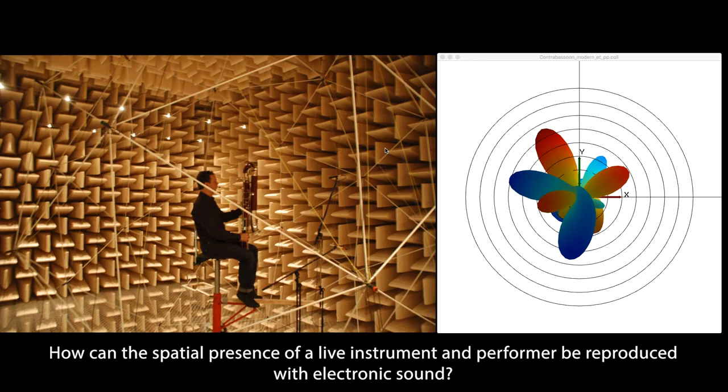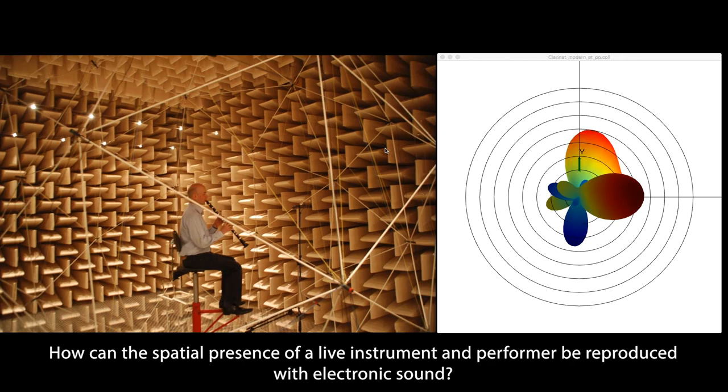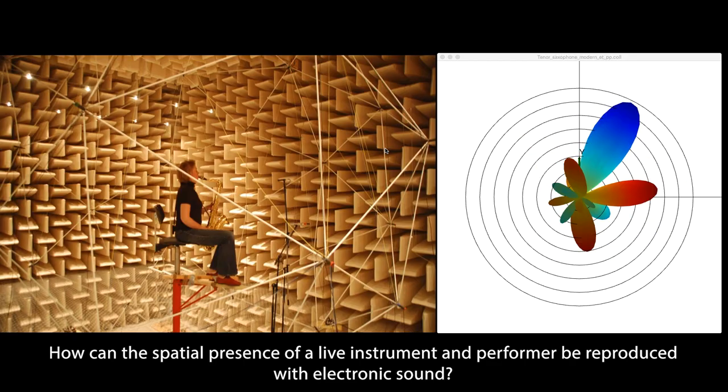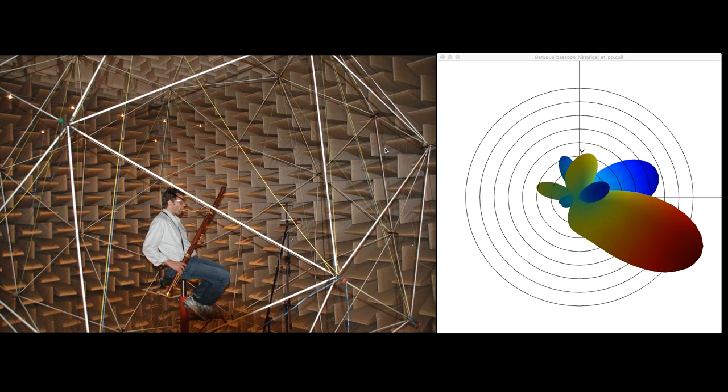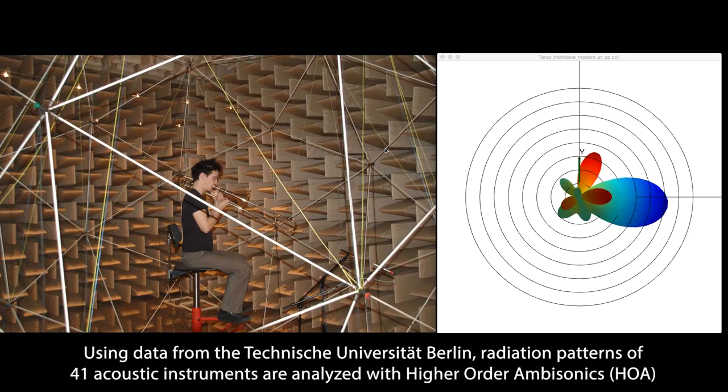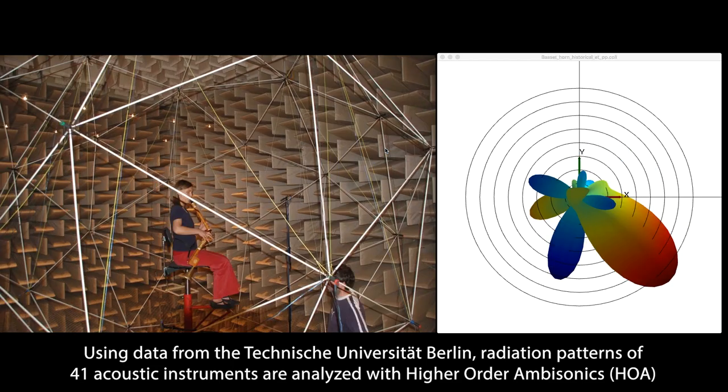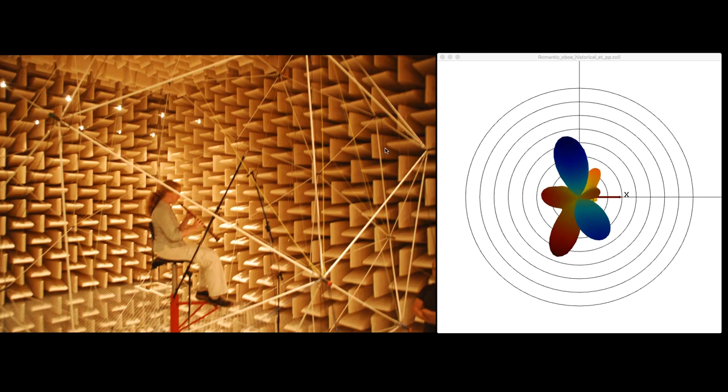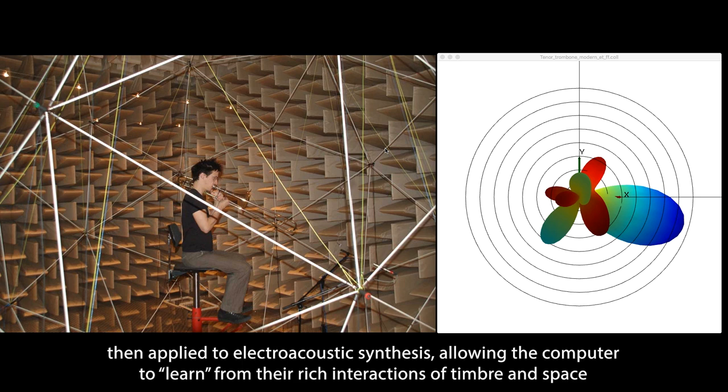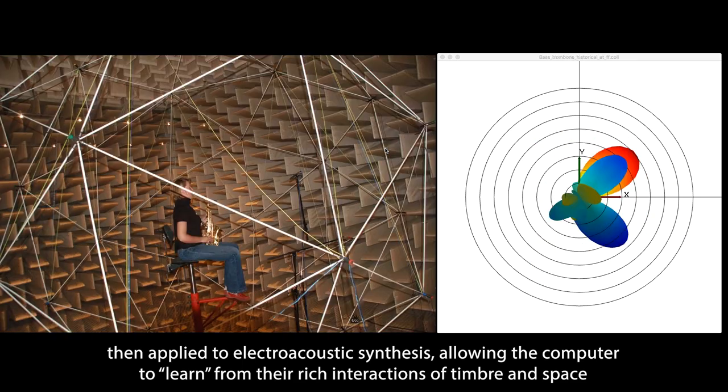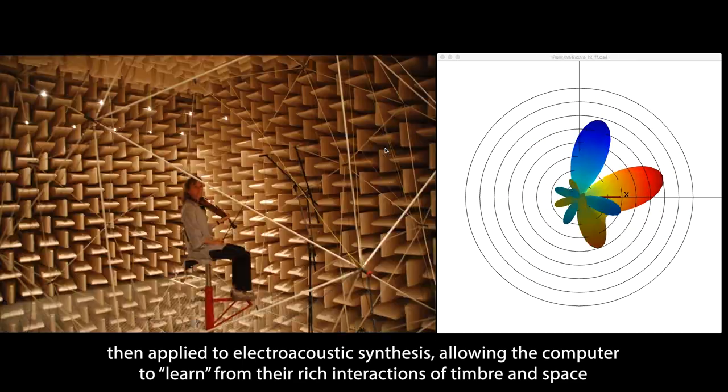How can the spatial presence of a live instrument and performer be reproduced with electronic sound? Using data from the Technische Universität Berlin, radiation patterns of 41 acoustic instruments are analyzed with higher order ambisonics, then applied to electroacoustic synthesis, allowing the computer to learn from their rich interactions with timbre and space.